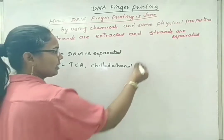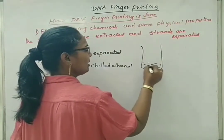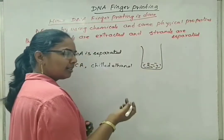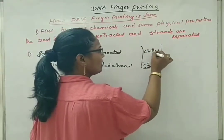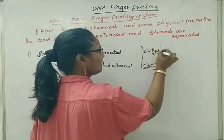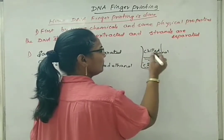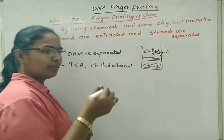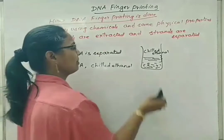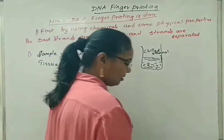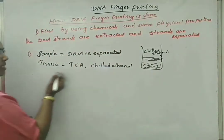In the test tube, when we add all these chemicals, the waste material — a combination of other non-genetic materials — separates out. On the topmost layer we see chilled ethanol, and in the middle we see the DNA fragments. These DNA fragments are separated with the help of a spatula, which we call spooling. So first, DNA is extracted.